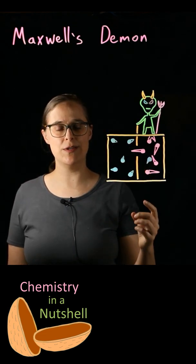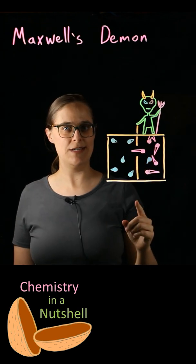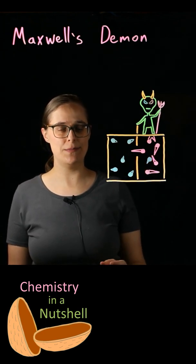So Maxwell's demon broke the law by allowing heat to congregate on the right. This started out as a playful thought, but it has kept scientists debating for a long time now.